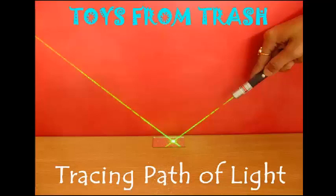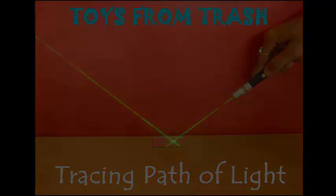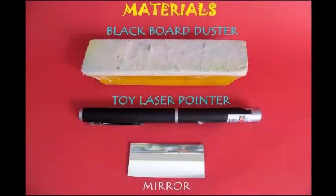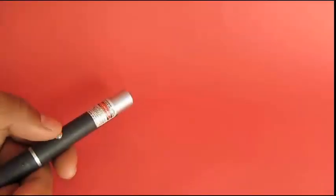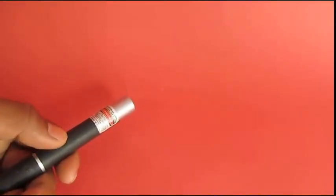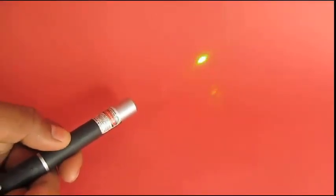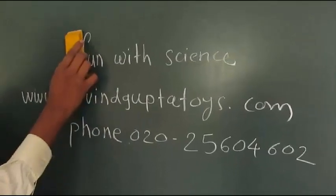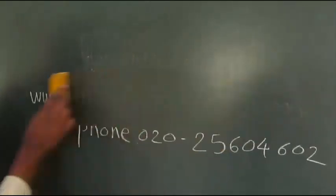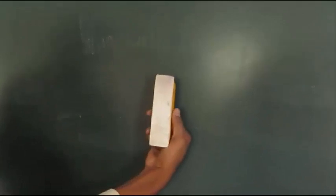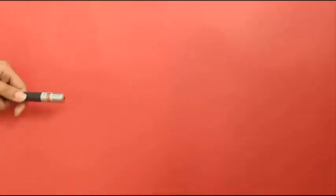All you need for this experiment is just a laser, a duster, and a mirror. First take the laser — don't point it at anybody as it can be harmful. Rub the blackboard with a duster so that the duster now contains chalk particles.